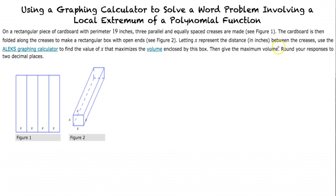Letting x represent the distance in inches between the creases, use the Alex graphing calculator to find the value of x that maximizes the volume enclosed by this box. Then give the maximum volume. Round your responses to two decimal places.